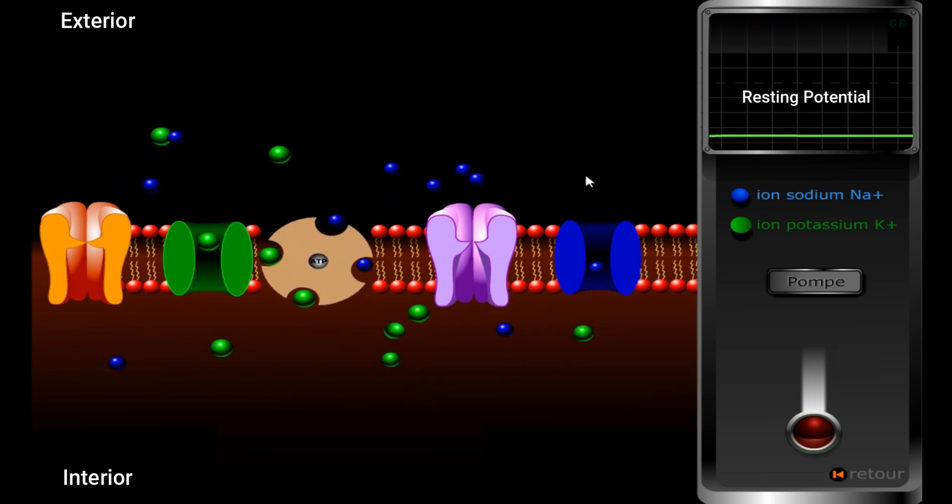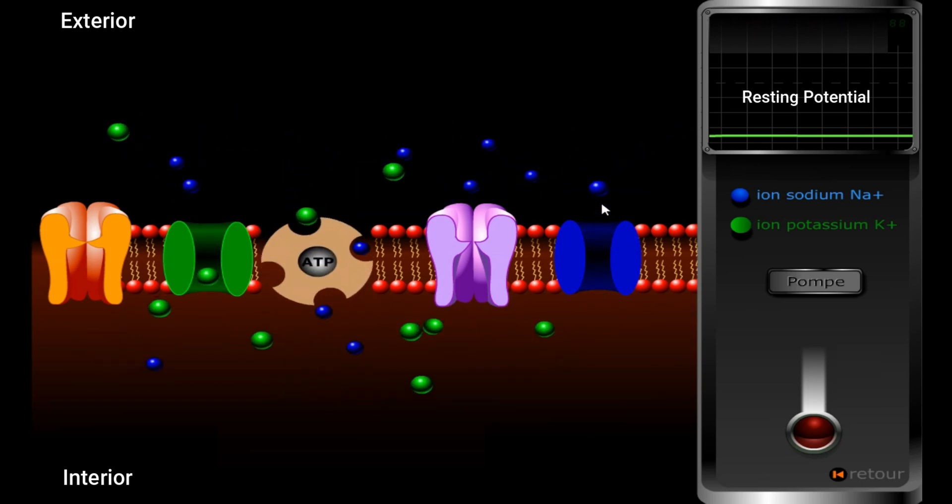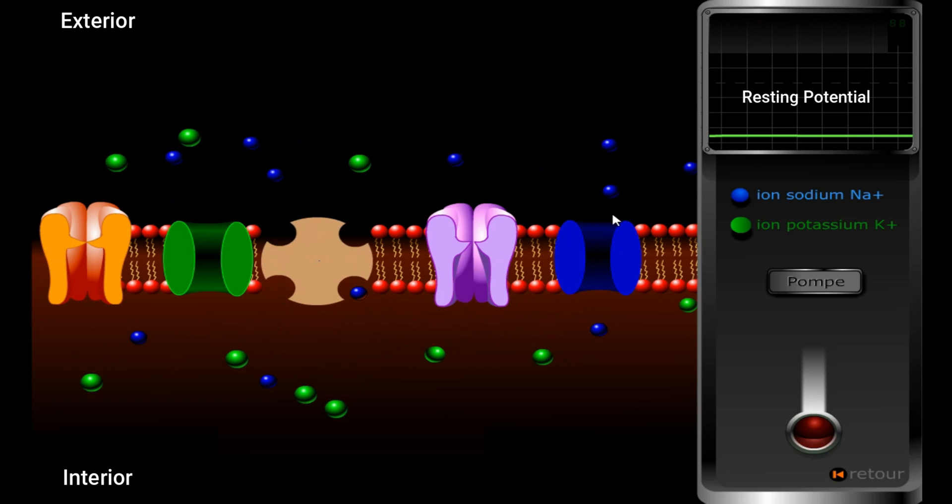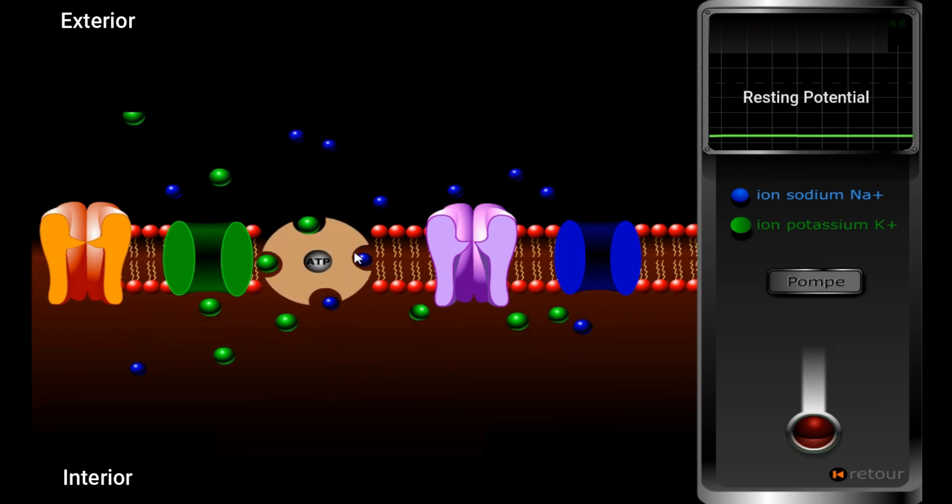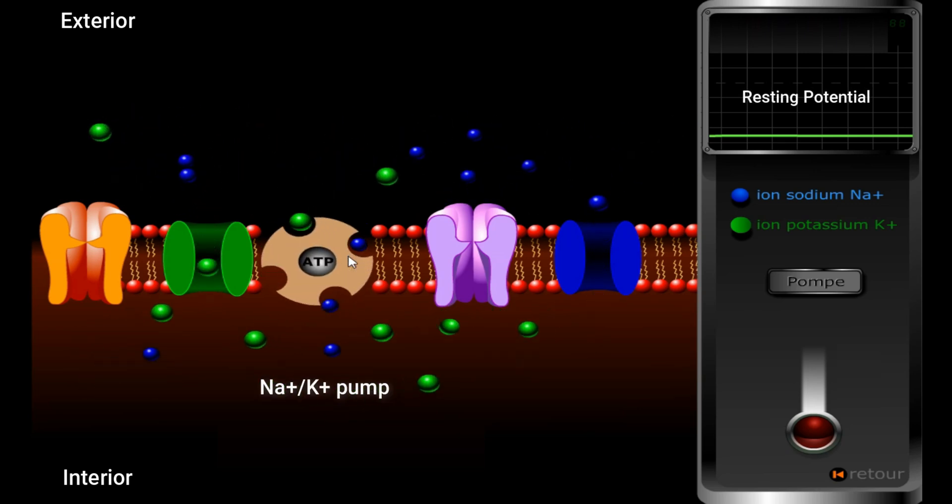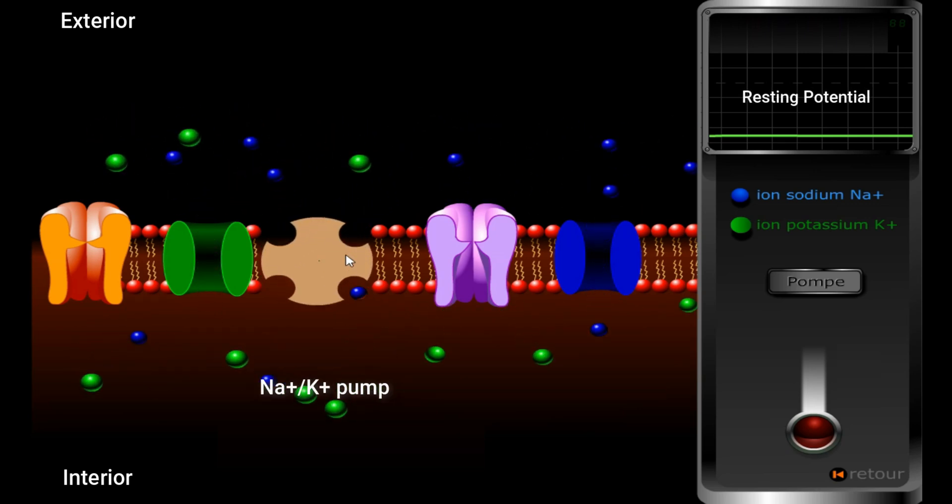This diffusion or transport, since it is done according to the concentration gradient, doesn't consume energy, and that's why it is called passive transport. However, the Na+/K+ pump functions or works against the concentration gradient.